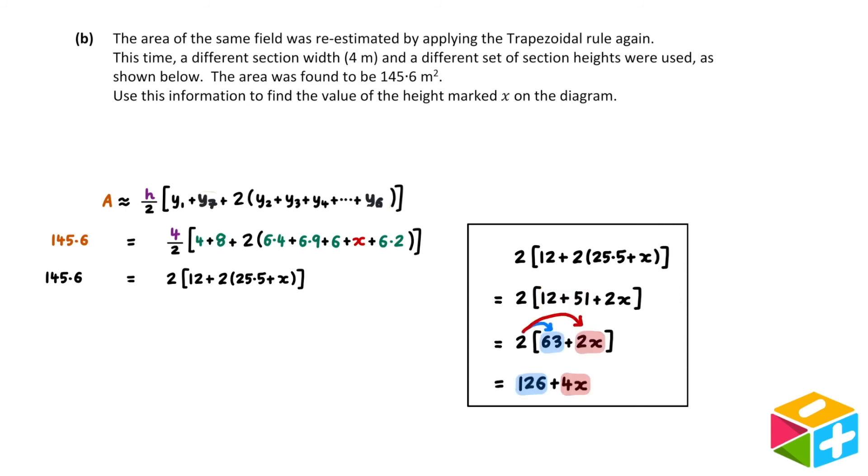From here, we can multiply out the square brackets. 2 times 63 is 126, and 2 times 2x is 4x.